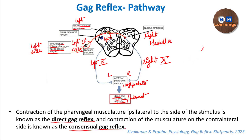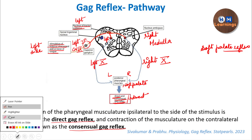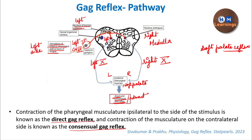There is also a soft palate reflex, which occurs when the soft palate is touched. Here the afferent is the trigeminal nerve — the fifth cranial nerve — which carries inputs to the spinal trigeminal nucleus, and from there projects to nucleus ambiguus to bring about the same gagging response. Gagging can therefore also be elicited by stimulating the soft palate.